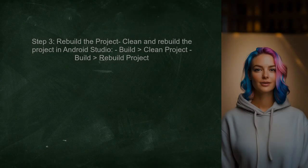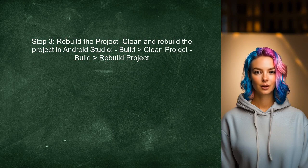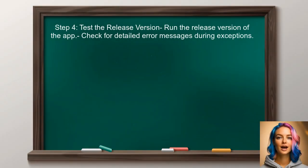After updating the ProGuard rules, rebuild the project. This will apply the new rules and ensure that the necessary classes are retained in the release build. Finally, test the release version again — this time, check if the error messages are more descriptive and if the unmarshaling issue is resolved.